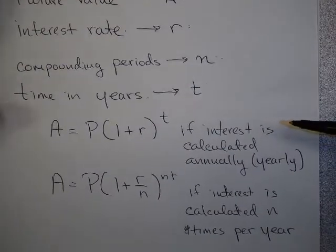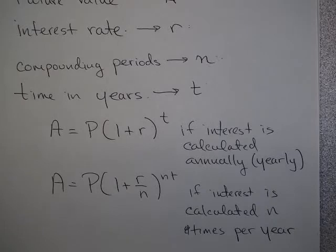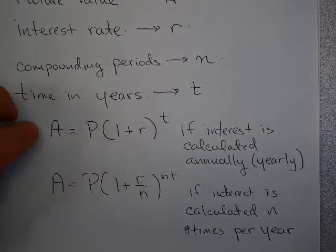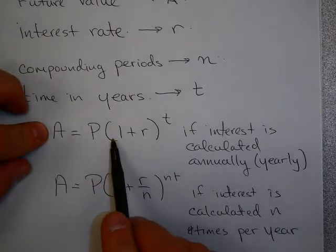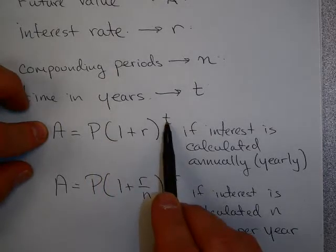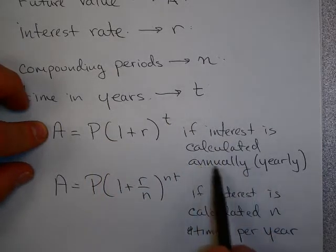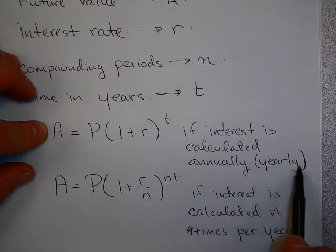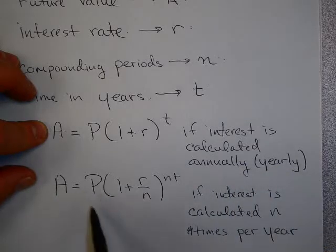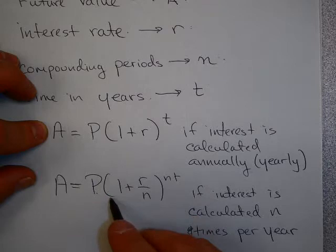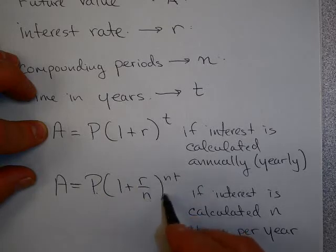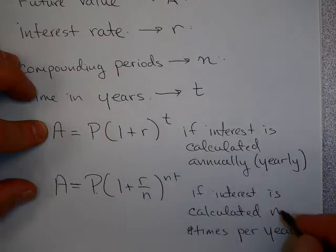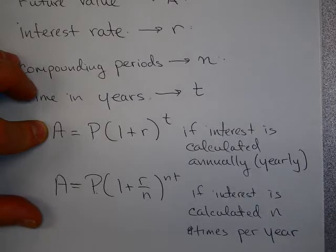Two formulas that we'll use in this section, which by the way will be provided for you on quizzes and tests if you need them, are A = P(1 + r)^t if interest is calculated annually, that means yearly. Or A = P(1 + r/n)^(nt) if interest is calculated n times per year.